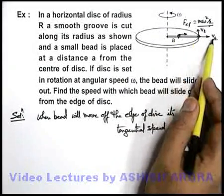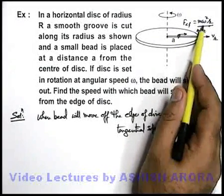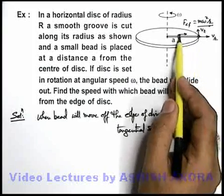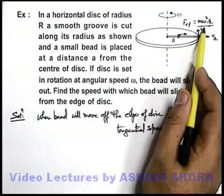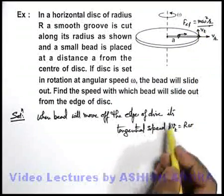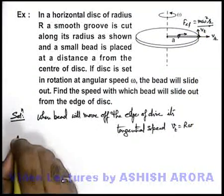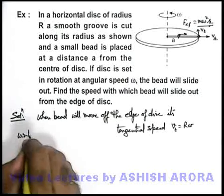And the radial speed it'll attain due to the acceleration of centrifugal force. As there is no friction it'll not be opposed, it'll be continuously going out because of centrifugal force. For that we can say, with respect to disc.